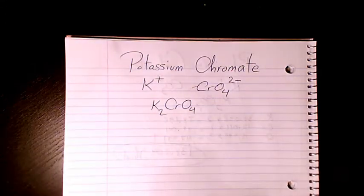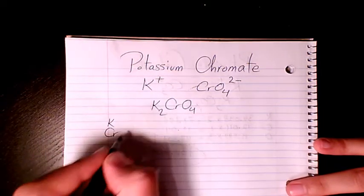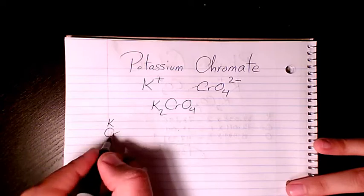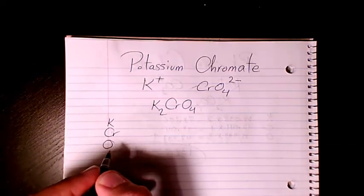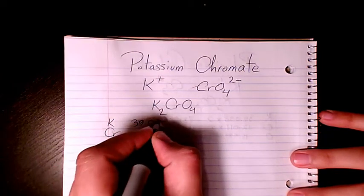So I list the elements first. You have potassium, chromium, and oxygen. The atomic mass from the periodic table: potassium is 39.098, chromium is 51.996.